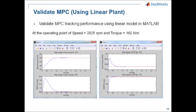After obtaining the MPC controller, you need to validate it. The first step is to validate against the linear plant model — either the same one used in MPC or a different one representing modeling error. For the operating point of speed 2025 RPM and torque 160 Newton-meters, a 10% boost pressure step change gives a two-second settling time with almost no overshoot, and a 10% EGR mass flow step change gives a one-second settling time with minimum overshoot.